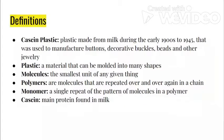Some definitions we need to know for this experiment: casein plastic, which is plastic made from milk during the early 1900s to 1945, that was used to manufacture buttons, decorative buckles, beads, and other jewelry.